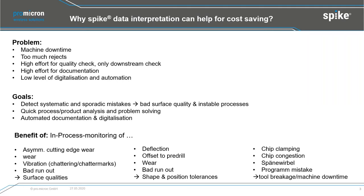We can also detect sporadic mistakes like chip clamping, chip congestion where chips surround the tool and block the process, or program mistakes. These lead to tool breakage and machine downtime. If you can read these effects correctly, you can monitor them in production and reduce your costs — and that's what I would like to explain today.